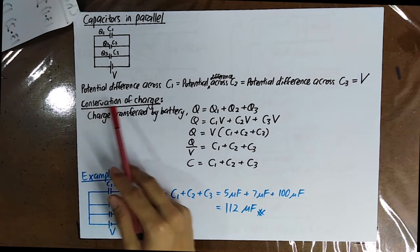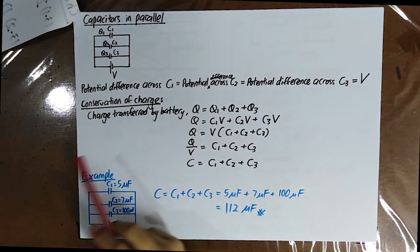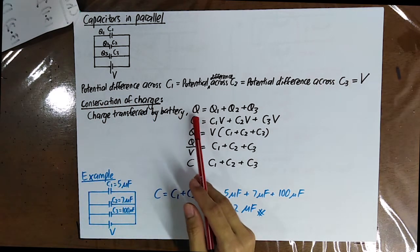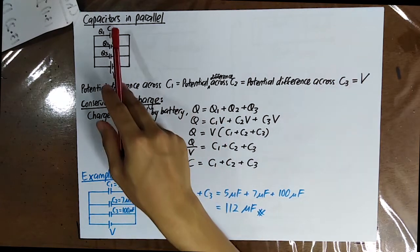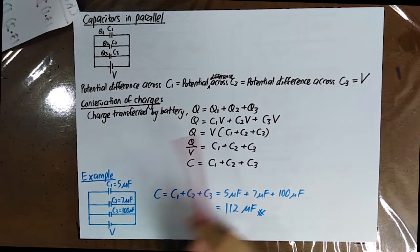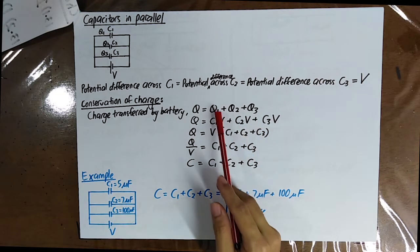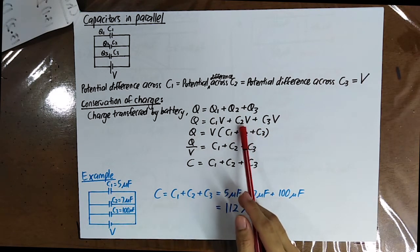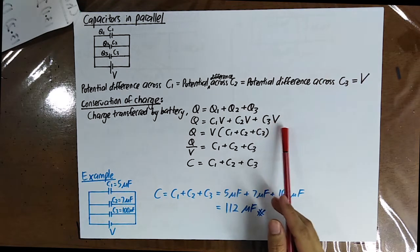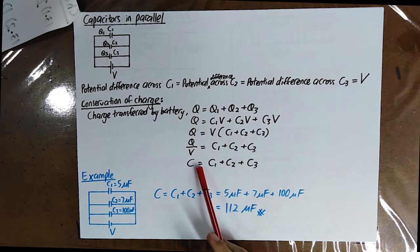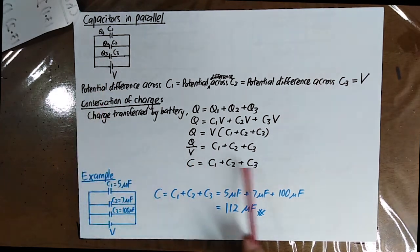By using the principle of charge conservation, the charge transferred by the battery equals the summation of all the charges on the individual capacitors. Q1 equals C1V, Q2 equals C2V, and Q3 equals C3V. Using this, you can get the equivalent capacitance for the capacitors in parallel.